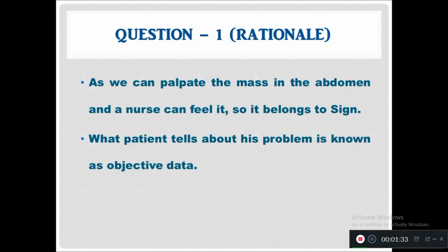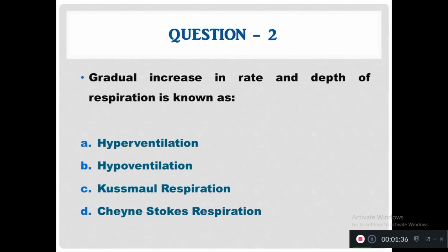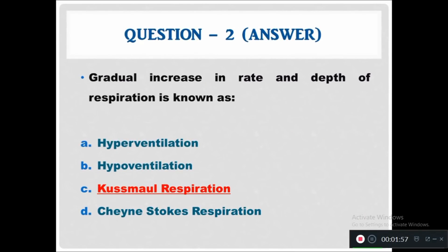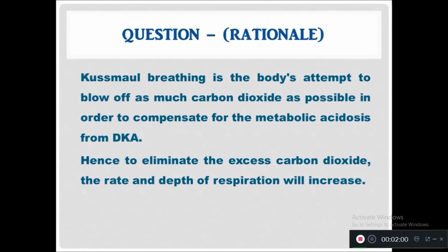Question 2: Gradual increase in rate and depth of respiration is known as? Option A: hyperventilation. Option B: hyperventilation. Option C: Kussmaul respiration. Option D: Cheyne-Stokes respiration. The answer is Kussmaul respiration. The rationale: Kussmaul breathing is the body's attempt to blow off as much carbon dioxide as possible to compensate for metabolic acidosis from diabetic ketoacidosis, so the rate and depth of respiration will increase.